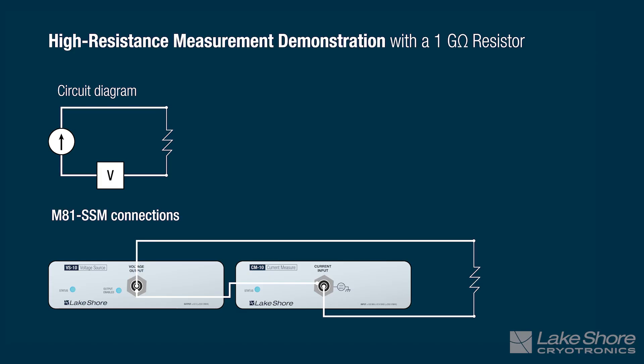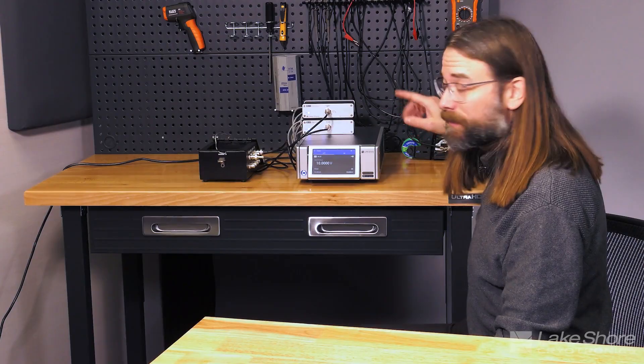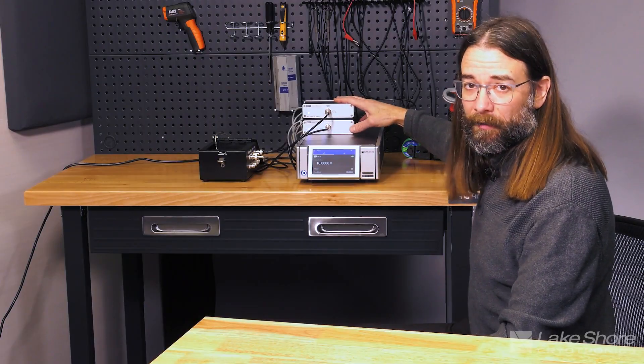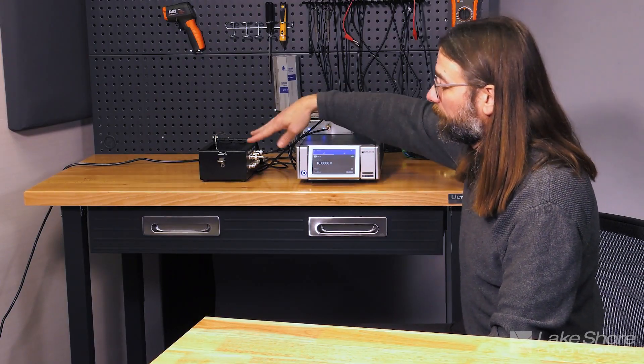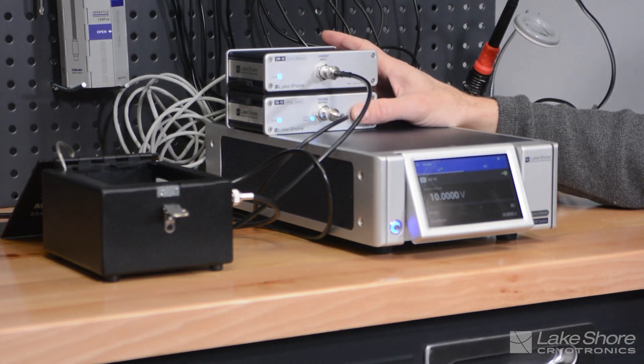So this is wired up in series. Our voltage source is going to apply a voltage across the device under test and then we're going to get a current flow through the resistor and we're going to measure that with our current input. Again this is a 1 gigaohm resistor. Typically above 10 megaohms you're going to want to use a voltage source and a current measurement to get the most accuracy.